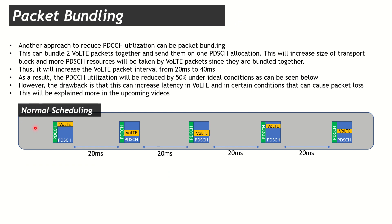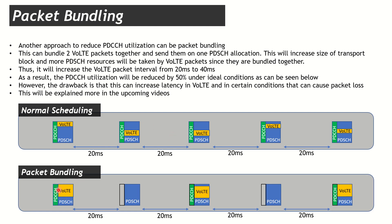Another technique is called packet bundling. In normal scheduling, every user reads a PDCCH and gets one VoLTE packet every 20 milliseconds. With packet bundling, two packets are put together, so the user reads the PDCCH once and receives two packets. Because it has received two packets, it does not need another packet after 20 milliseconds — it can wait 40 milliseconds instead. Similarly, the next two packets are bundled together at the next allocation, creating a 40-millisecond period instead of 20 milliseconds.